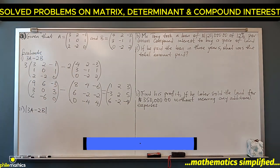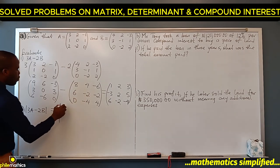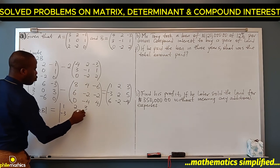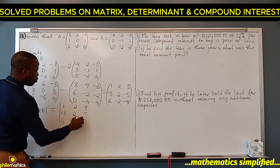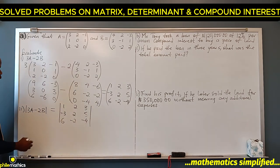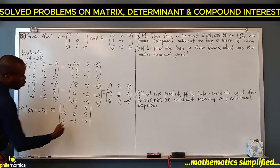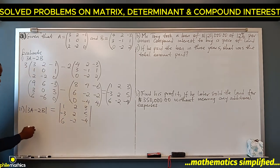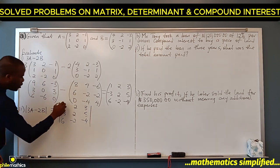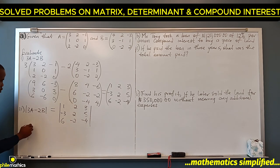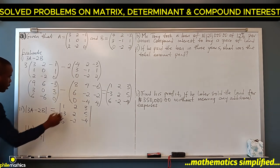The second problem is to find the determinant of this matrix: 1, 2, 3, -3, 2, 5, 6, -2, -4. To find the determinant, we expand along the first row. So 1 multiplies the determinant of the submatrix you get by deleting its column and row: 2, 5, -2, -4.